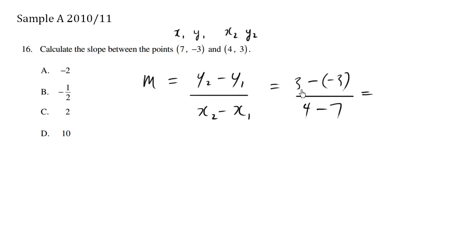So this is 3 plus 3, which is 6, over 4 minus 7, which is negative 3. This is equal to negative 2. So the answer here is A.